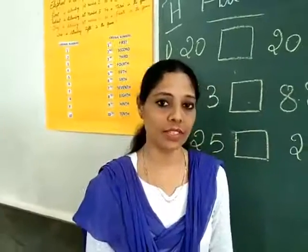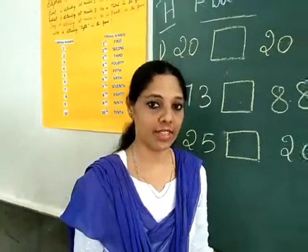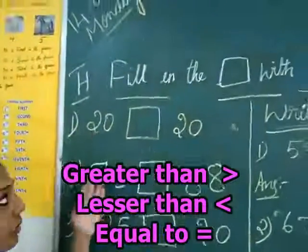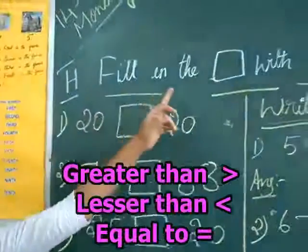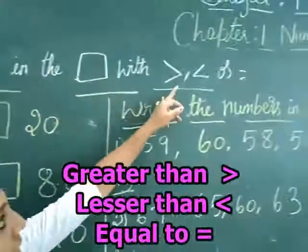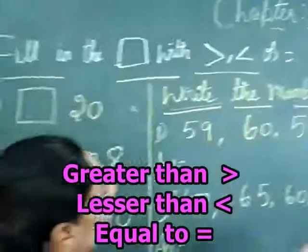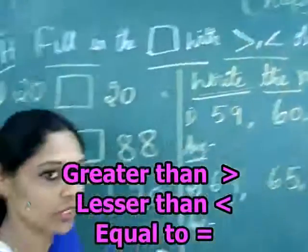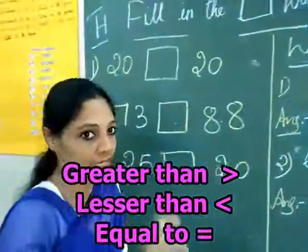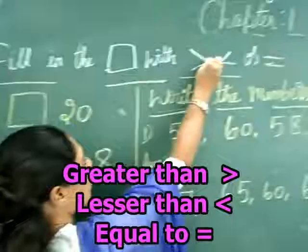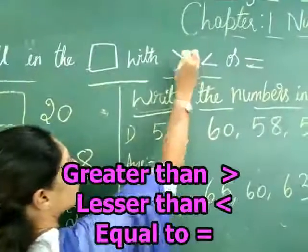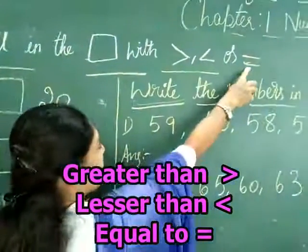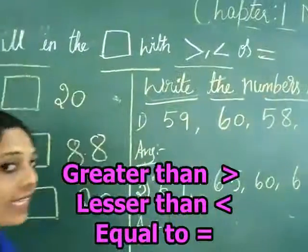Now we will learn about the greater sign, lesser sign, and equal sign. What do you mean by greater sign? A big mouth is open towards the bigger number, and the sharp point faces the smaller number. If both numbers are equal, you write equals.